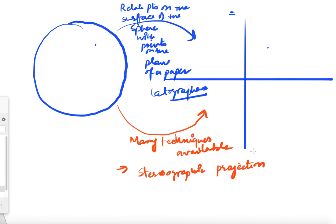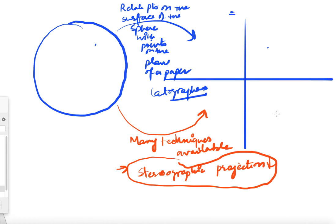In making maps, there are better techniques than stereographic projection, so it's not commonly used in maps we see daily. But this particular stereographic projection turns out to be very important in the case of complex analysis — it lets us visualize points on the complex plane as points on a sphere.